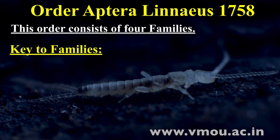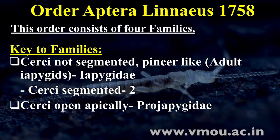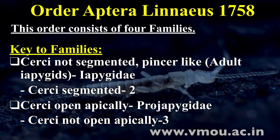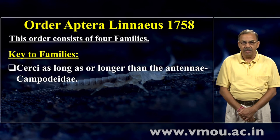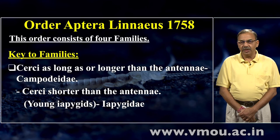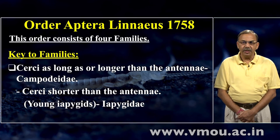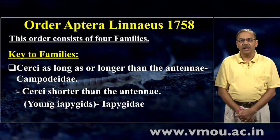इस order में 4 families हैं। उनकी keys को work out करें तो: पहले — cerci not segmented, pincer-like → family Japygidae। Alternate character — cerci segmented: दो नम्बर बिंदु पर cerci open apically → family Projapygidae; cerci not open apically → तीन नम्बर बिंदु पर। तीन नम्बर पर — cerci as long as or longer than the antenna → family Campodeidae; और यदि cerci antenna से छोटी हो → family Japygidae में वो कीड़े शामिल किये जाते हैं। According to Asic 1941, इस order में ये चार families हैं।